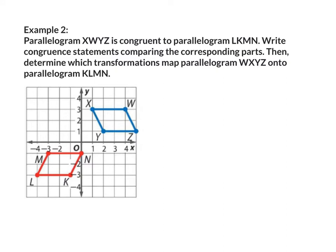Example number two: parallelogram XWYZ is congruent to parallelogram LKMN. Write congruent statements comparing the corresponding parts, then determine which transformations map parallelogram WXYZ onto parallelogram KLMN. It looks like it's been reflected over the X-axis, then translated left. We're going to start with our angles. Angle X is congruent to angle L, so they will both receive one arc.